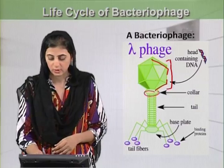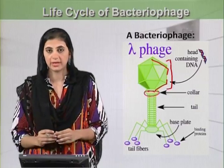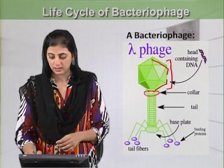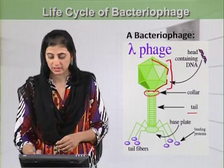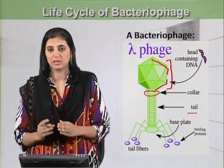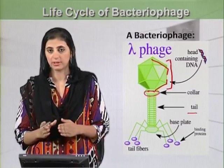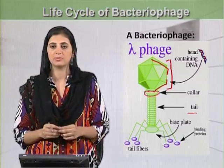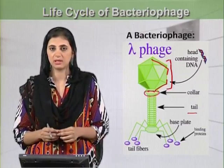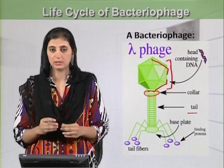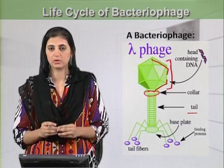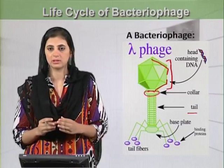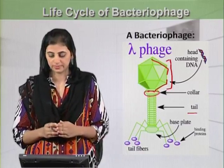Then we have a collar which connects the head and tail. The tail is made up of an outer tube called the sheath or sheath protein, and the inner tube which is called the core. The core is a hollow tube.